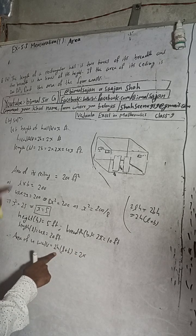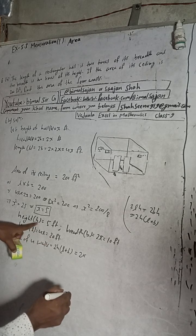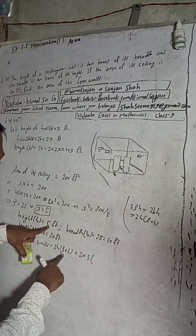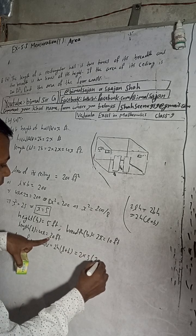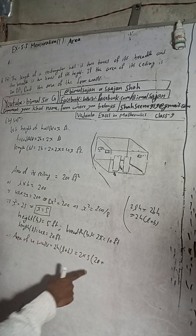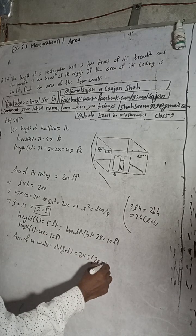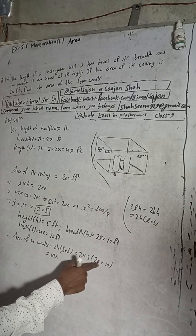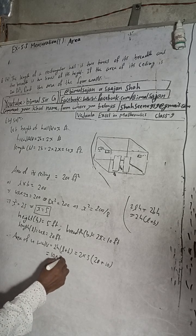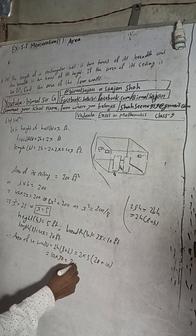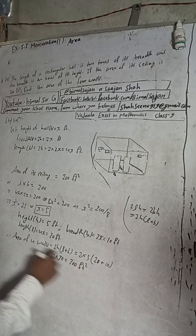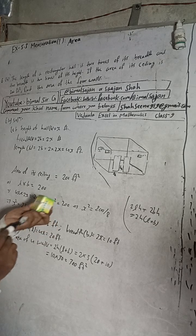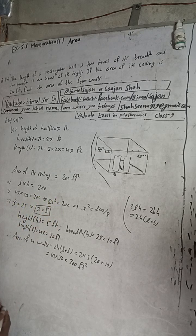Using the formula 2H(L + B): H equals 5, length equals 20, breadth equals 10. So the area of four walls equals 2 times 5 times (20 + 10) equals 10 times 30 equals 300 square feet. The book answer is 300, so it is correct.